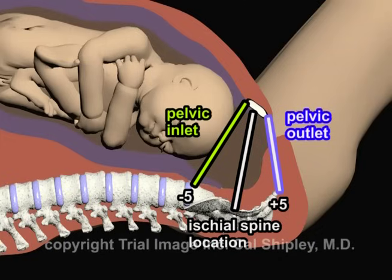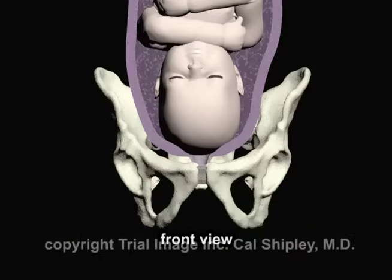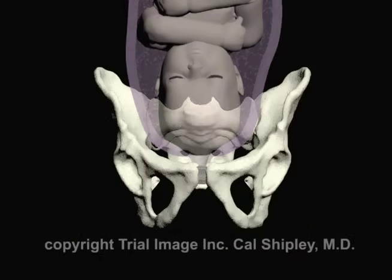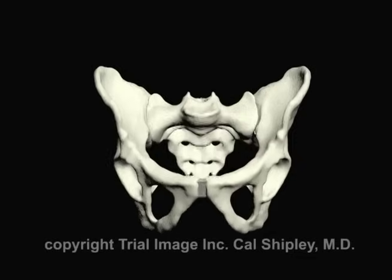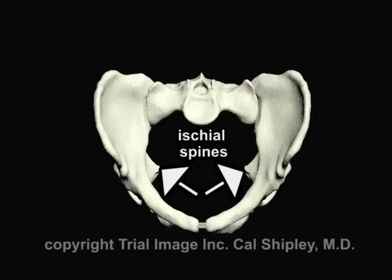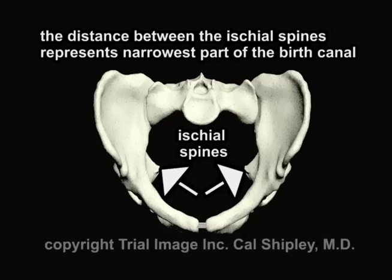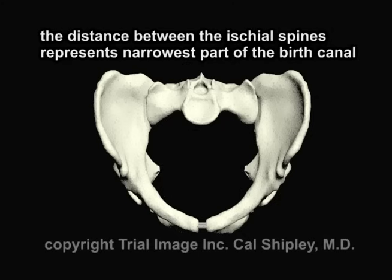Located approximately halfway between the pelvic inlet and the pelvic outlet are the ischial spines of the maternal pelvis. The ischial spines are difficult to depict on a cross-sectional side view, so let's switch to a frontal view to clarify their anatomical position. Rotating to a view from above the pelvis gives us an even better look. The significance of the ischial spines is that they represent the narrowest part of the birth canal and therefore the most difficult portion of the canal for the fetal head and shoulders to traverse.